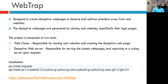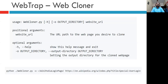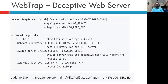WebTrap currently works with Ubuntu 18. To clone any website, you use the web_cloner.py file, which takes two parameters: the output directory and the website URL — for example, a Wikipedia login page folder as the output and the Wikipedia login URL. The cloned pages will reside in that folder. The trap_server.py file is used whenever someone tries to access files from that folder; an alert is sent to the system administrator and an entry is made to the syslog server.